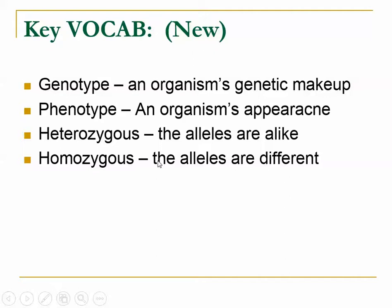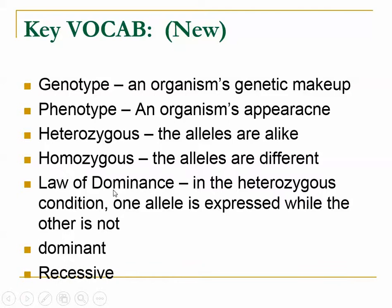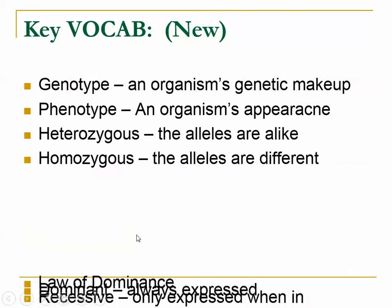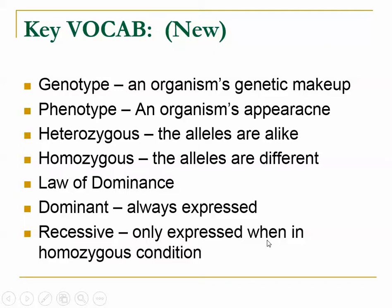Now we have the law of dominance. The law of dominance says in the heterozygous condition, one allele is expressed while the other is not, and I will show you examples of this. The allele that's always expressed is called dominant, and the allele that's only expressed when there are two of them is called recessive.